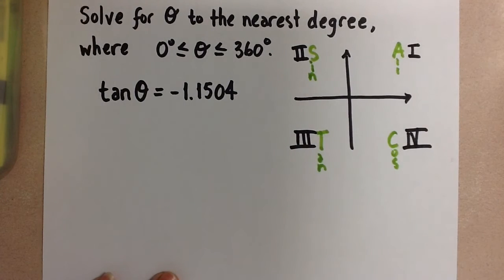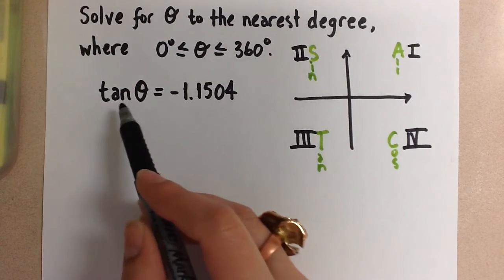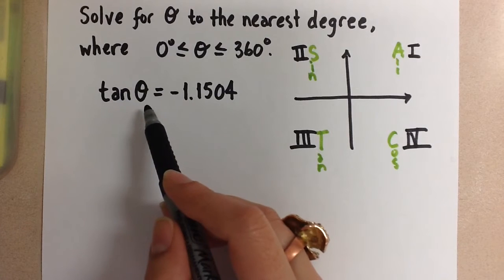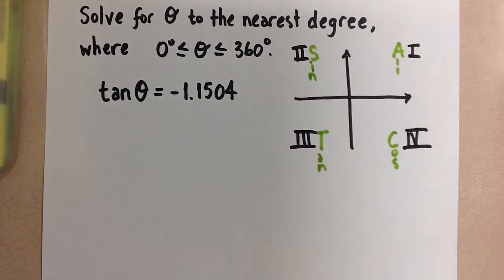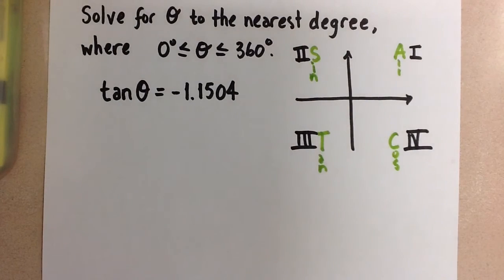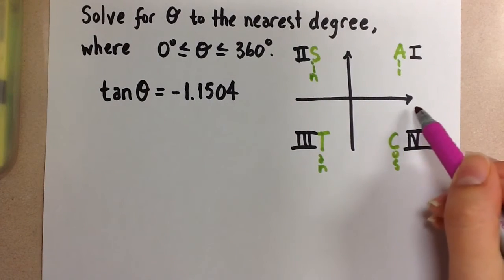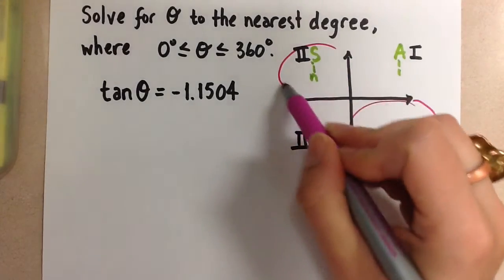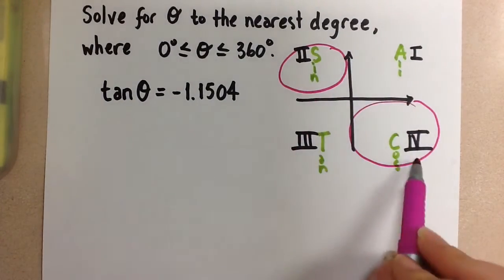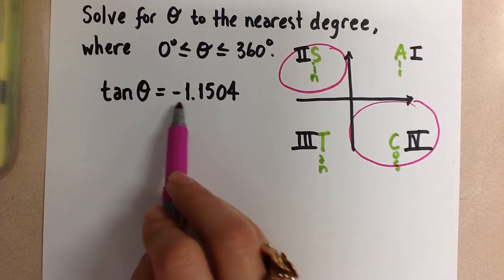So when we're solving for this particular angle in this equation here, we see that the tangent of the angle is negative. So this means we're going to be working in the fourth quadrant and in the second quadrant, because these are the two quadrants where the tangent ratio is negative.